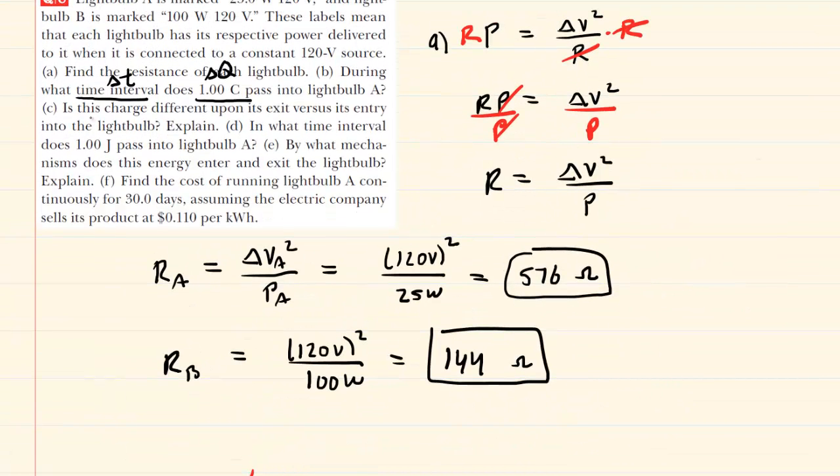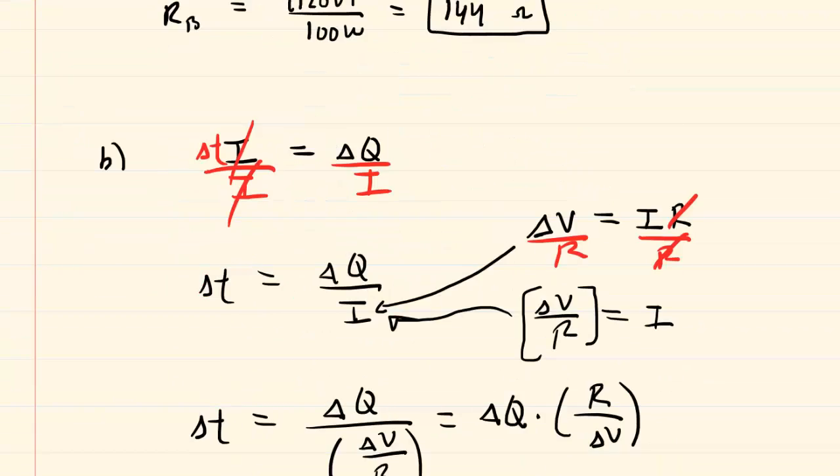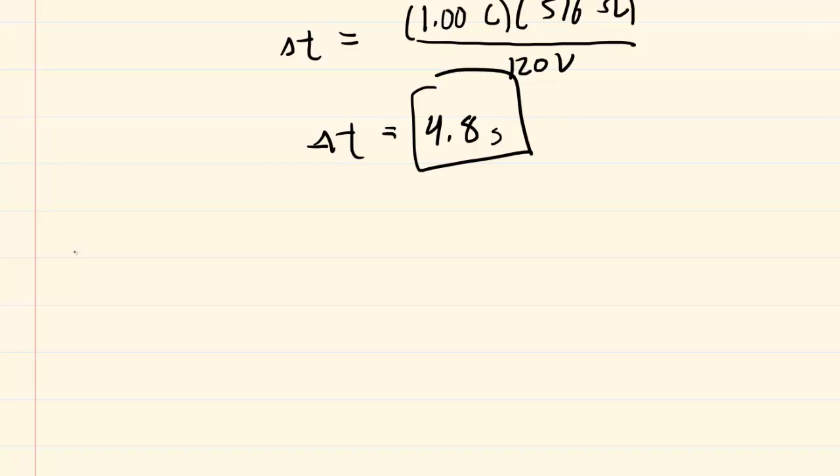Scrolling up to part C, it says, is this charge different upon its exit versus its entry into the lightbulb? And the short answer is no. And the reason would be that charge is conserved. So that simply means that if one coulomb of charge is entering the lightbulb, then one coulomb necessarily must exit. And so this would be the correct answer to part C of the question.